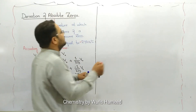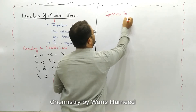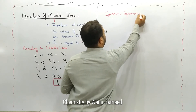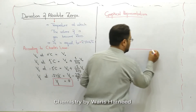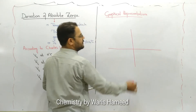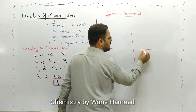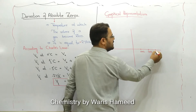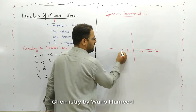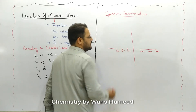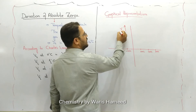Now, the graphical representation. We have a graph with the x-axis representing temperature and the y-axis representing the volume of the gas. On the positive side of the x-axis we mark 100, 200, and 300 degrees Celsius, and on the negative side we mark minus 100 and minus 200 degrees Celsius.